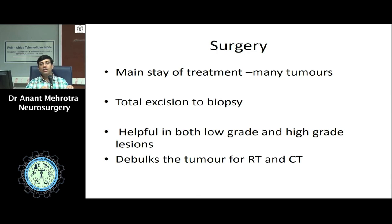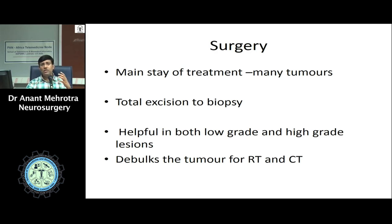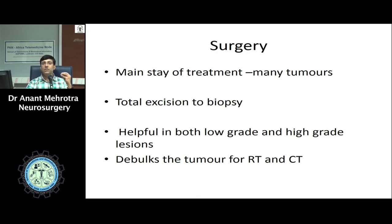Other adjunctive investigations include CSF analysis, commonly done for patients who have drop metastases — for instance, posterior fossa tumors like ependymomas, medulloblastomas, or glioblastomas, which are known to spread via CSF. If tumor cells are found in CSF, it indicates a poorer prognosis. Electroencephalography is done for patients who present with seizures. Perimetry is done for patients with involvement of the optic apparatus to assess visual field defects. Audiometry is done for patients with acoustic neuromas — tumors of the eighth cranial nerve — who present with hearing loss. An endocrine profile is extremely important for patients with pituitary adenomas or tumors near the sella.